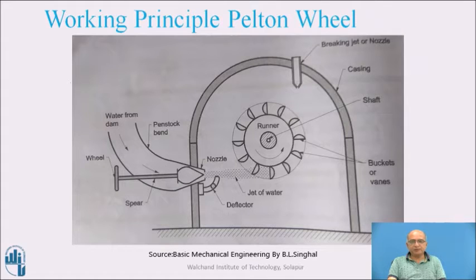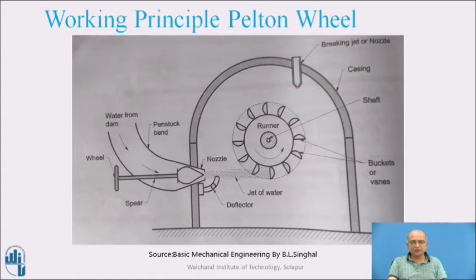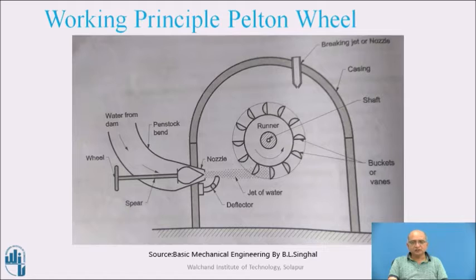Now we will see the principle of the Pelton wheel, which is basically used for the high head type of hydraulic power plant. Construction-wise, it consists of a rotor provided with runners. On the periphery of the runner, there are buckets or vanes which have a curved shape. The shaft is located between two journal bearings.